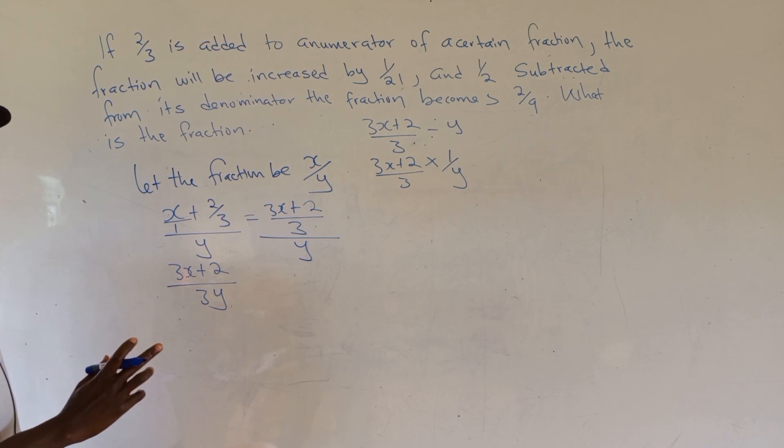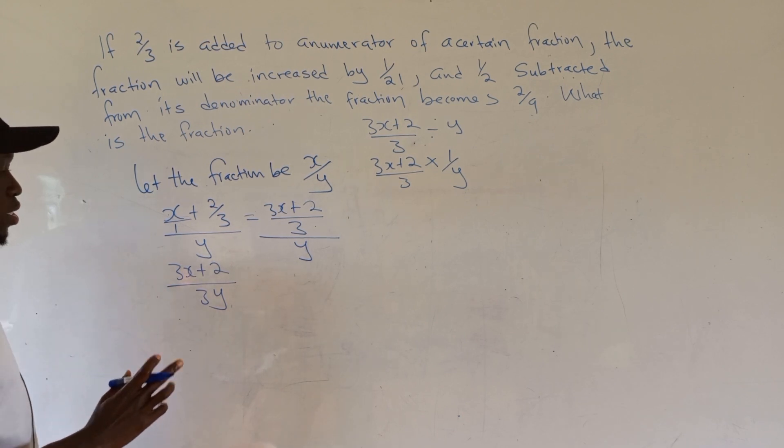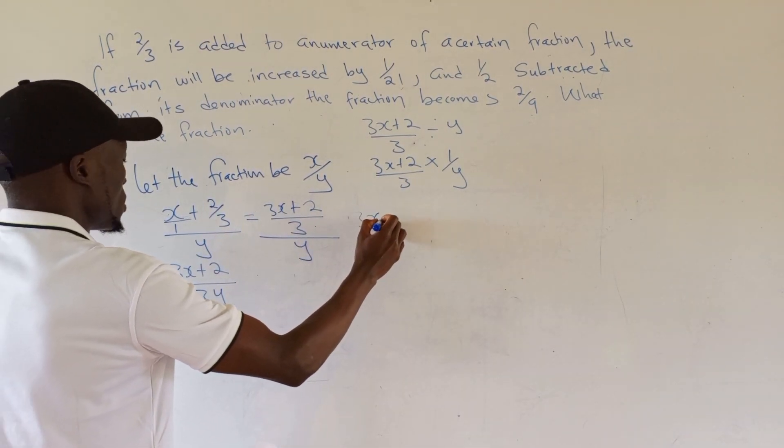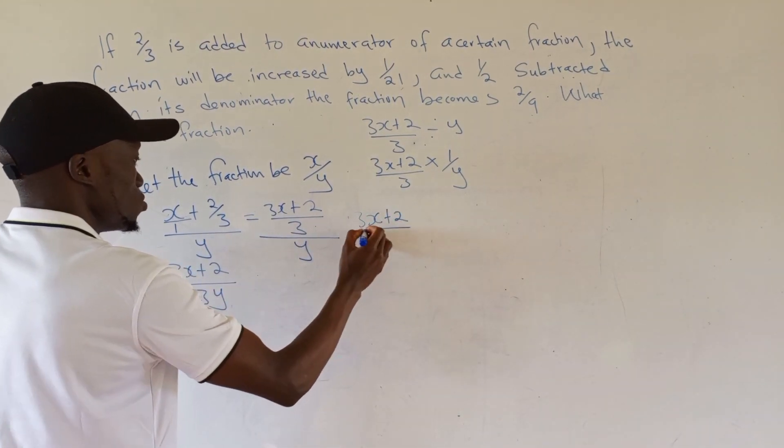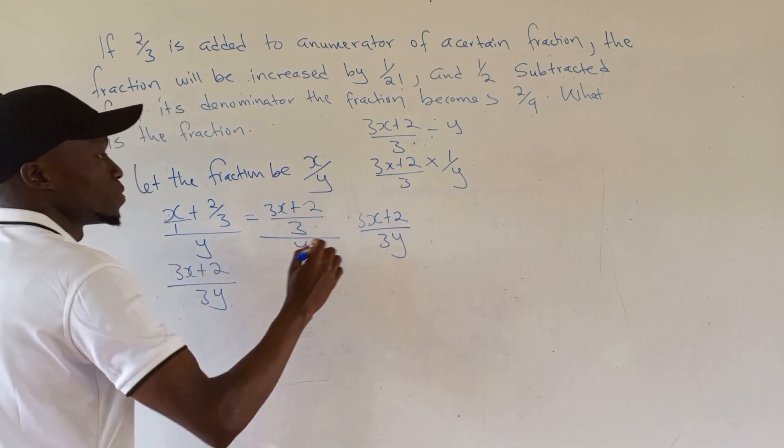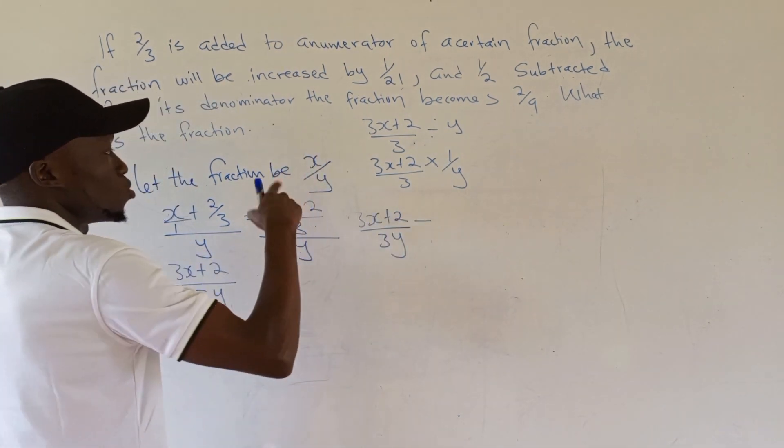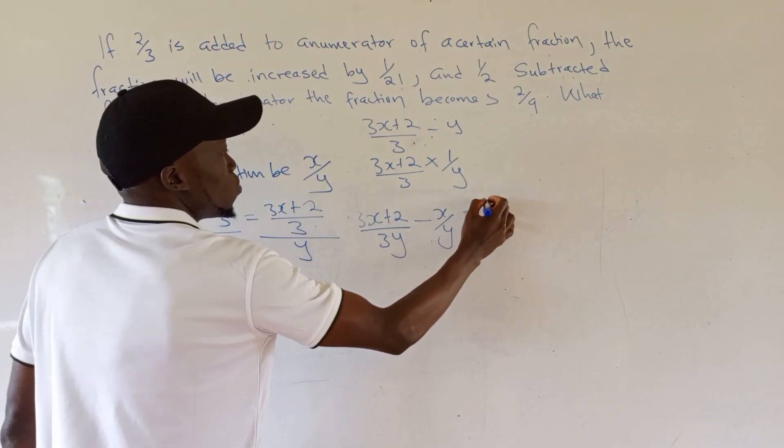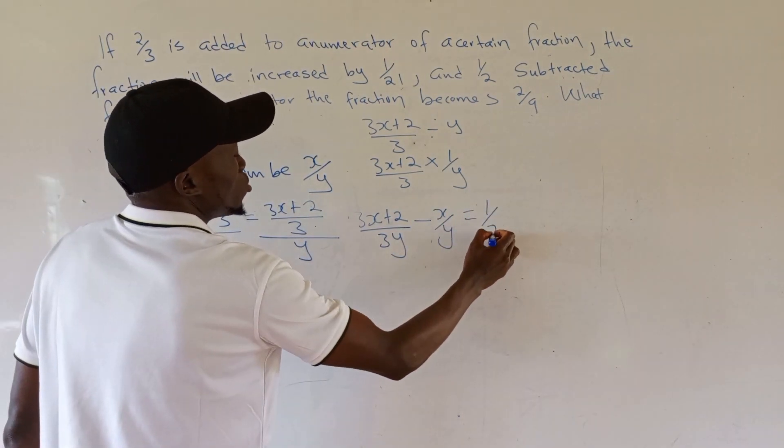This is our fraction after adding 2/3. We've been told it increased by 1/21. Meaning, (3x + 2)/(3y) minus the original fraction x/y should equal 1/21.